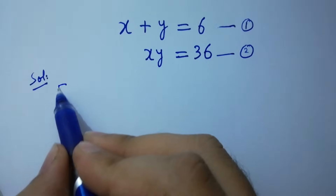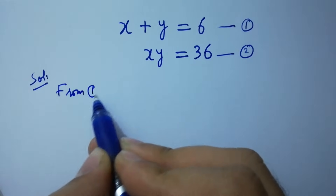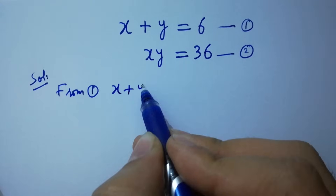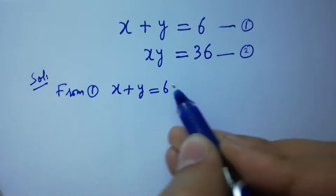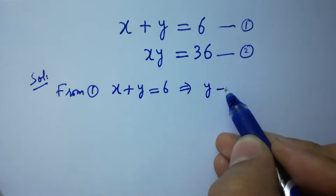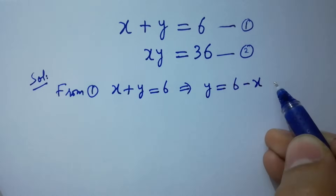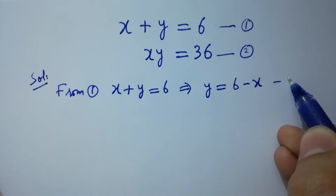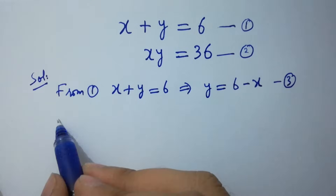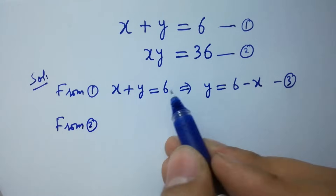From the first equation, x plus y equals 6, so y equals 6 minus x. We take this as the third equation.